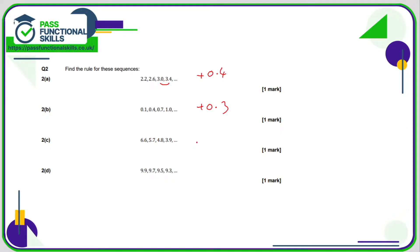6.6, 5.7, 5.7 to 4.8, you might want to use a calculator for this one, but we're going down in increments of 0.9. And 9.9, 9.7, 9.5, that's minus 0.2.